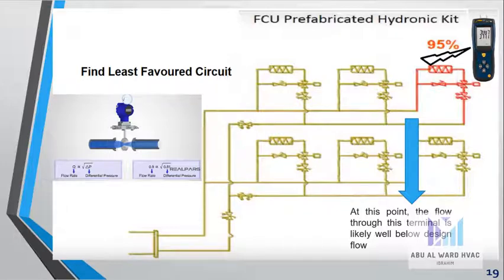Let's take an example for a system with many circuits. We will first define the furthest or least favored circuit, which may suffer from less flow due to the distance from the pump. We can use the differential pressure gauge to measure the differential pressure, thus we can get the measured flow in this unit and divide it by the design flow. Because of less flow here, we can get 95% of R value. At this point, the flow through this terminal is likely below design flow.